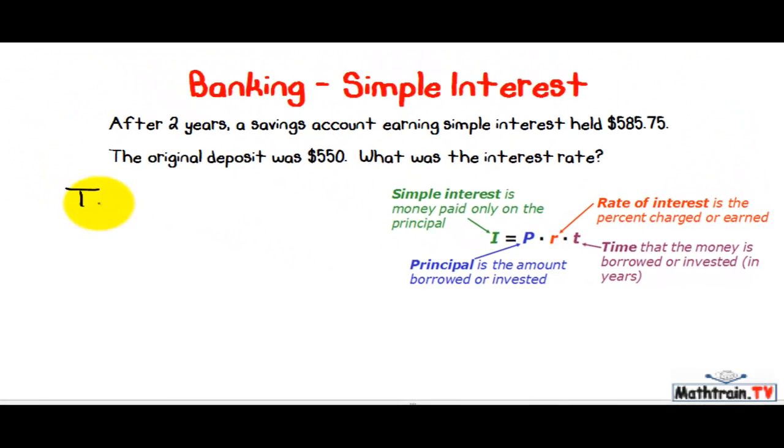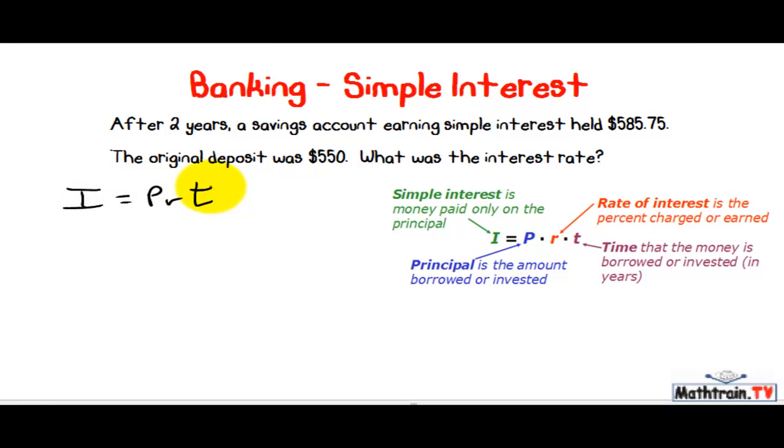So, I'm going to write down I equals PRT, and I'm just going to plug in my values. Now, the original deposit, right here, was $550. So that's going to be my P. So let's plug that in. So my original deposit is $550. Alright, that's good.